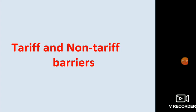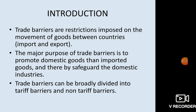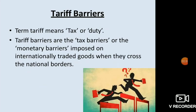There should be restrictions on international trade to some extent, with limitations decided by the domestic country. Trade barriers are restrictions imposed on the movement of goods — and services — between countries. The major purpose of trade barriers is to promote domestic goods over imported goods and to safeguard domestic industries by controlling imports. Trade barriers are broadly divided into tariff barriers and non-tariff barriers.